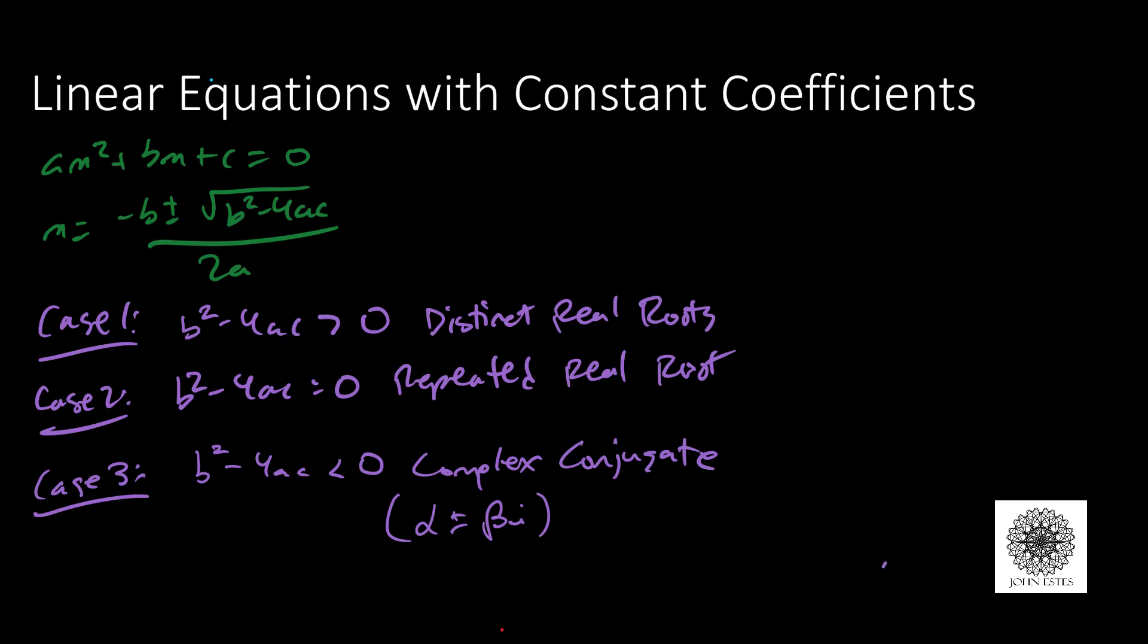If you take our auxiliary equation, a quadratic equation am squared plus bm plus c equals zero, from the quadratic formula m will follow this form: negative b plus or minus the square root of b squared minus 4ac over 2a. Remember, my solution looks like e to the mx power. In the previous discussion we covered cases one and two.